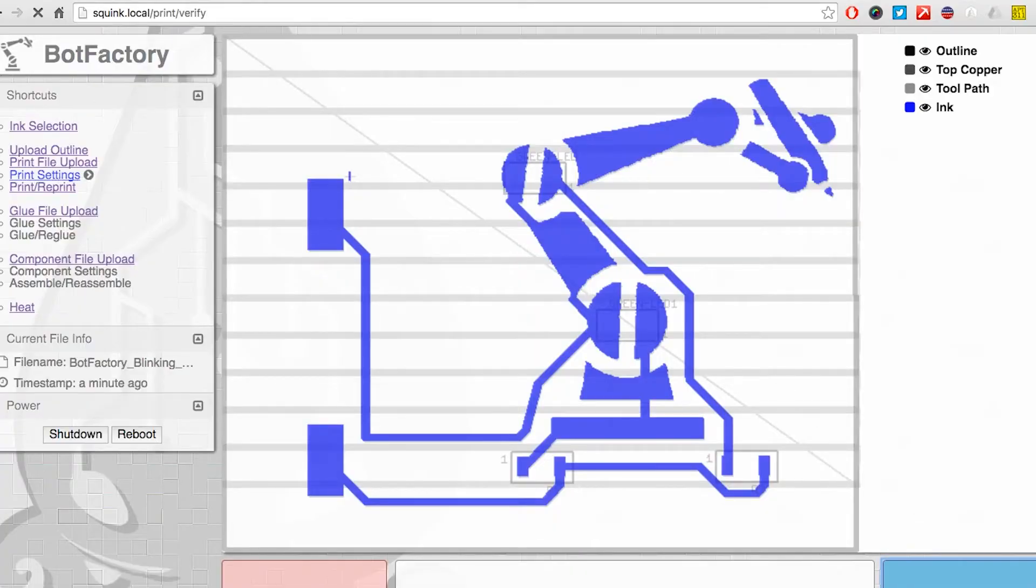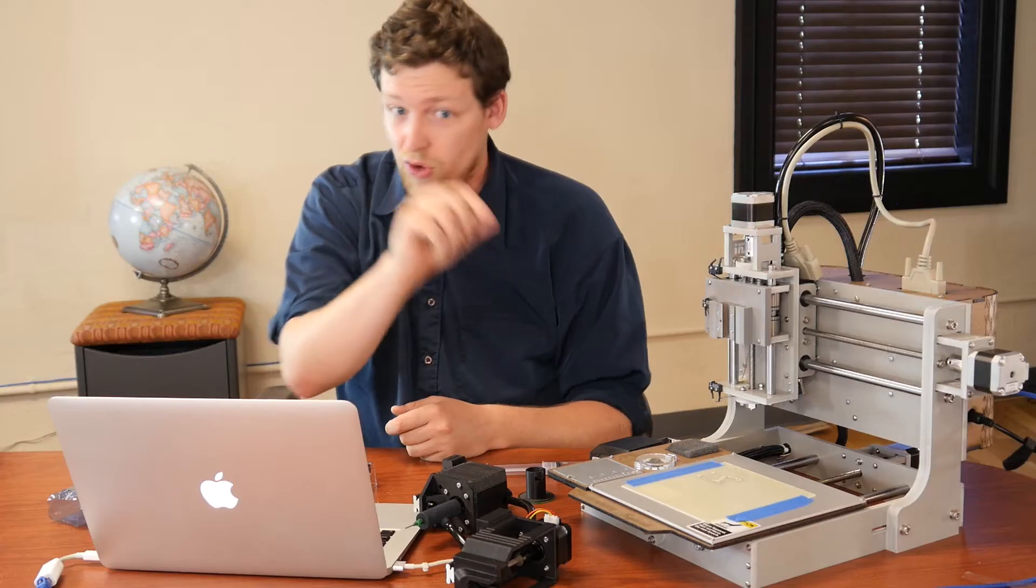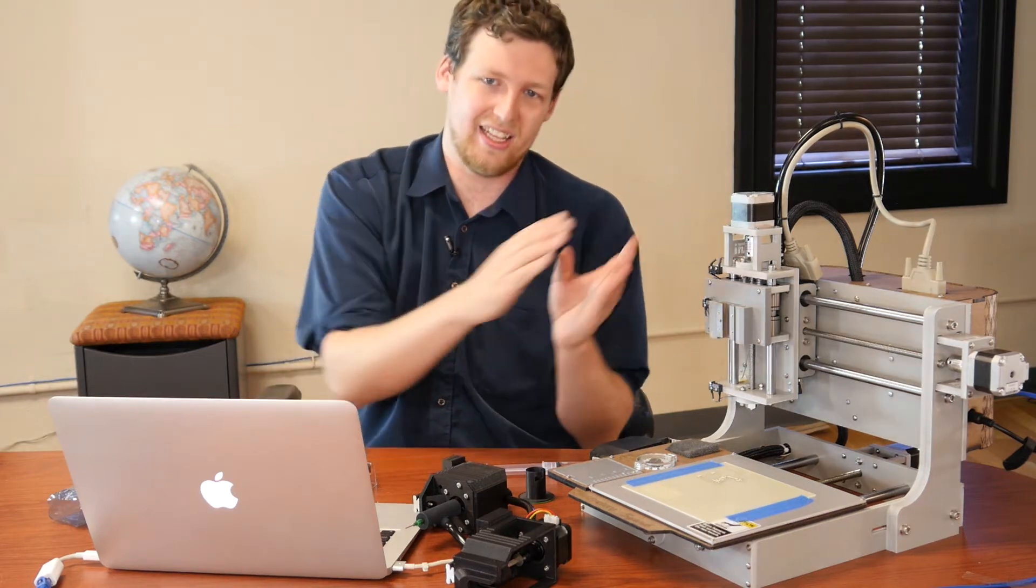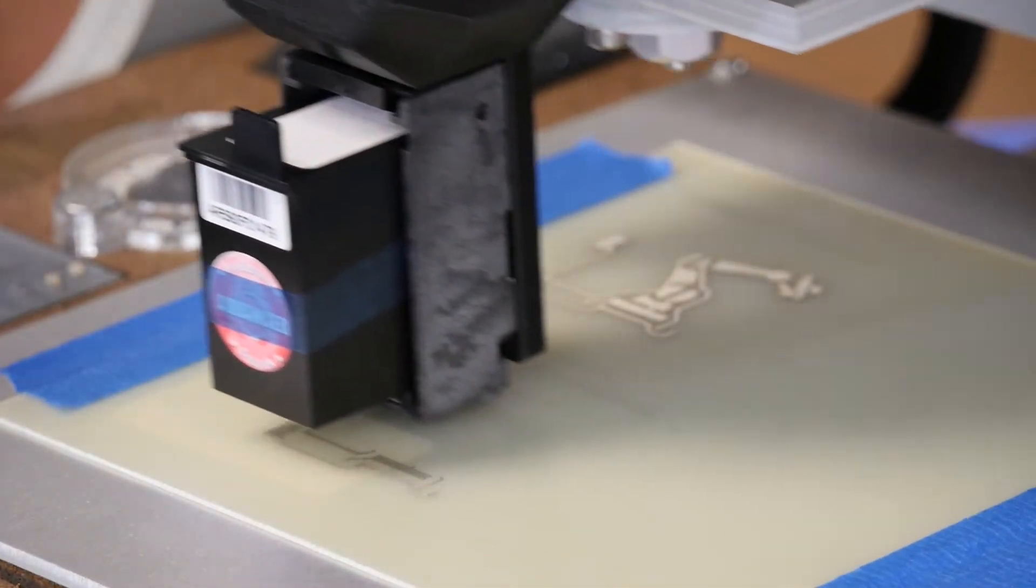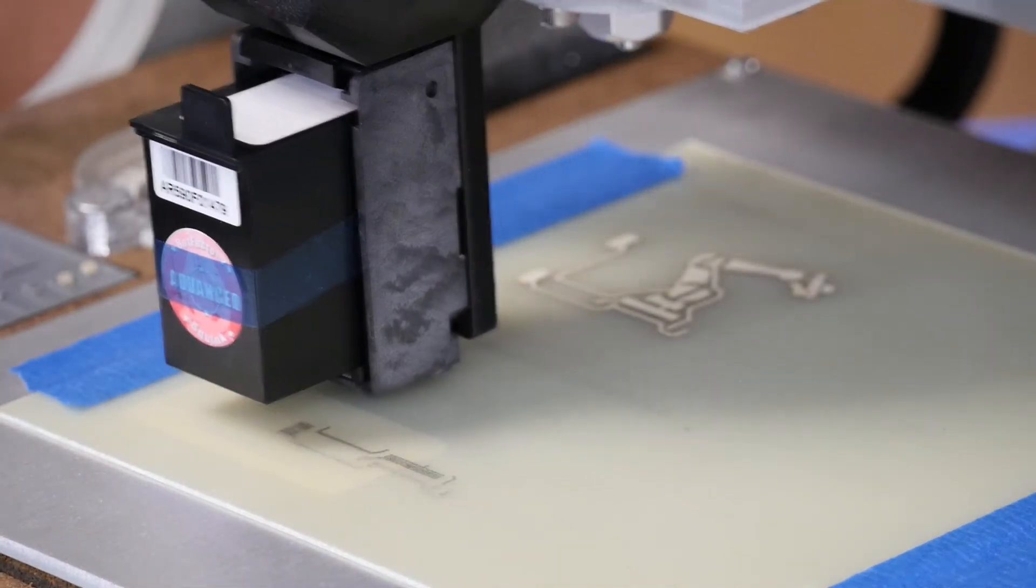The interesting thing about Squink is that you can use images of what your traces are. We'll draw something, scan it, and then print it in silver which is really useful. They could just draw where their conductive lines are going to be going.